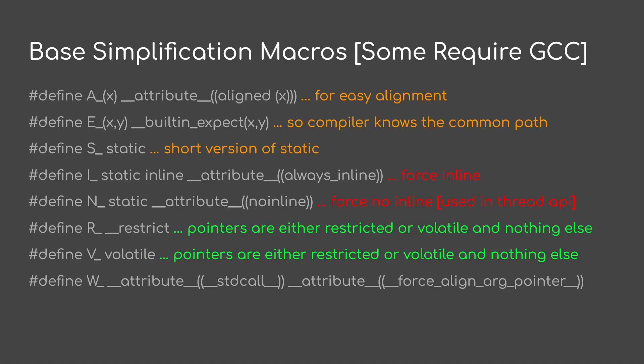Let's start with some base simplification macros. Almost all of my simplifications start with some capital letter, followed by an underscore, and then some arguments. I keep them small because they're used often. I have some for alignment. I have one that simplifies built-in expects so the compiler knows the common branch path. I have a short version of static. I have a pair, I and N, for forced inline and forced no inline. I prefer to be explicit with the compiler, tell it exactly what I want. I also have another pair, R and V — these are for pointers. And then finally, W, for Win32 imports.